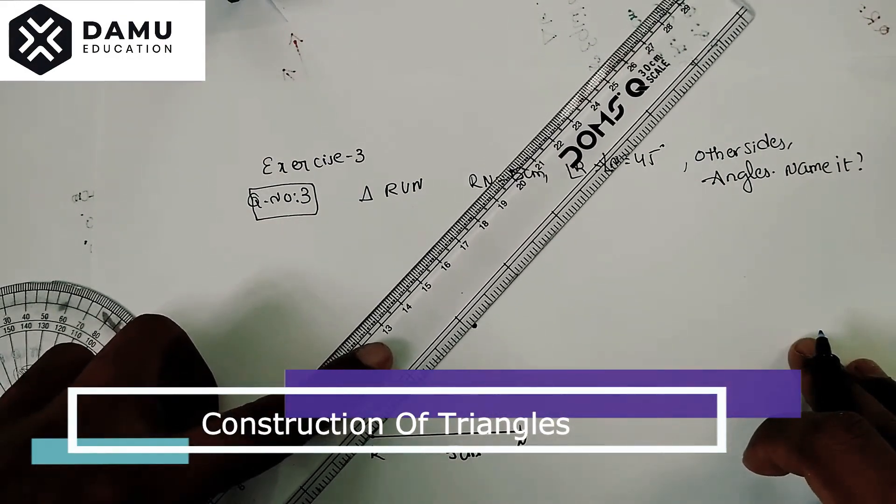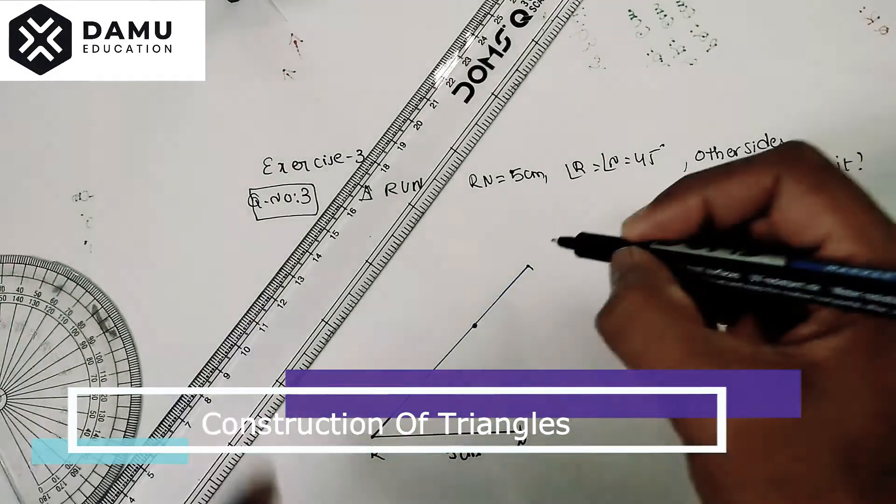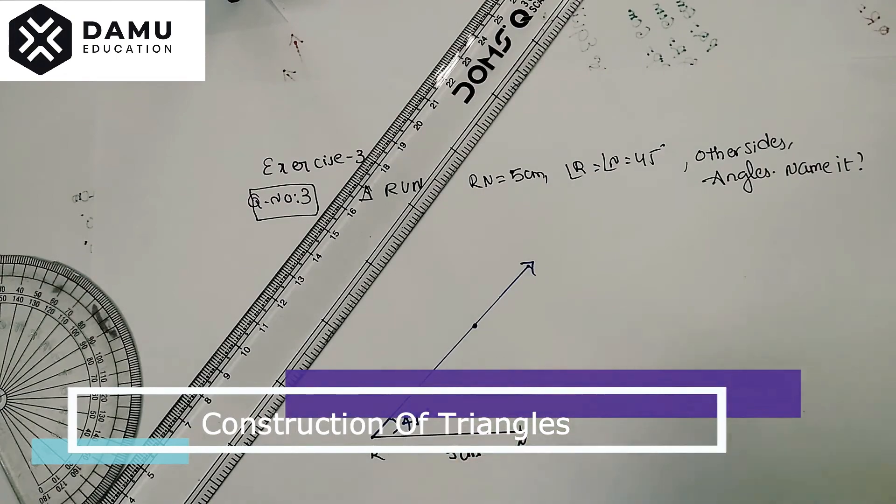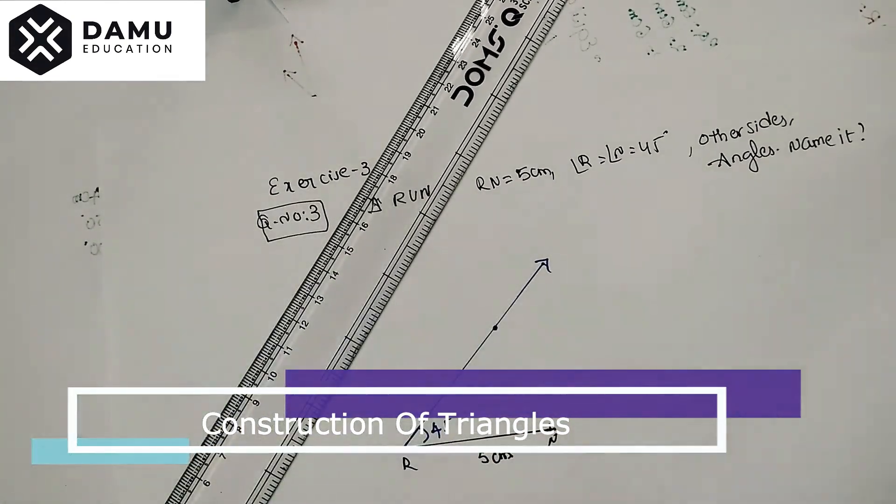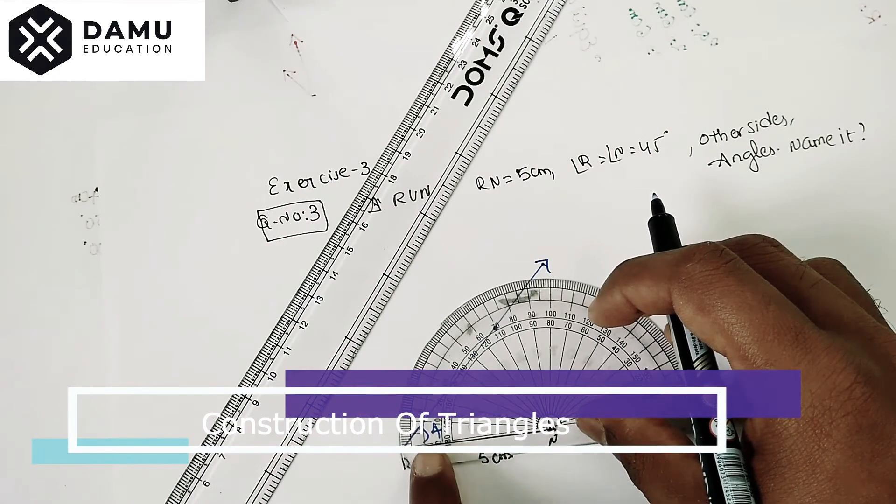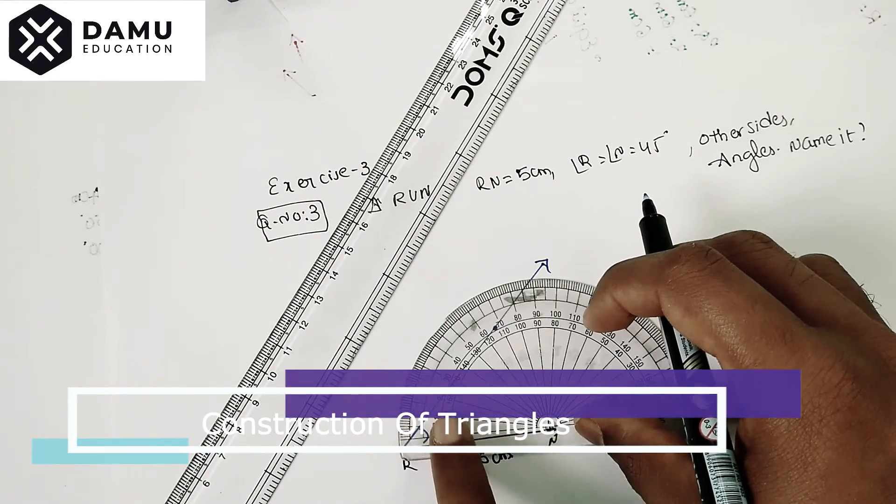Draw one ray from here at 45 degrees. Then at N, which is also 45 degrees, we have to place the midpoint at N. From this side we have to measure the angle because this line coincides from this side.